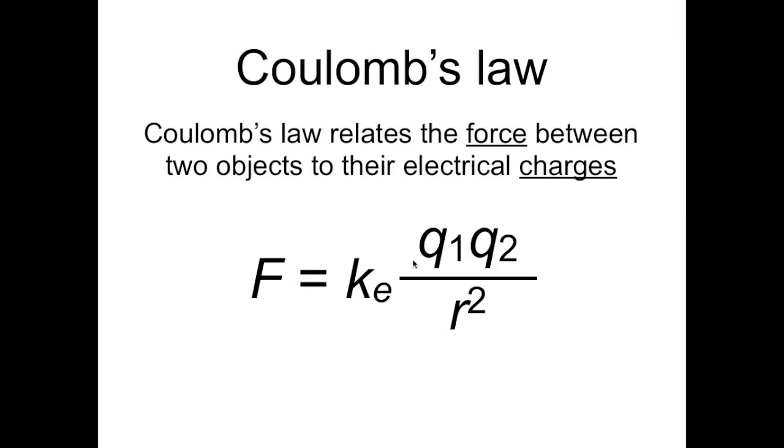So multiplying the charges is one key to Coulomb's law. The other key is the r squared in the denominator. Suppose we doubled the distance between two charges. How would the force change? Doubling the distance means we're changing the r to 2r. Squaring 2r gives 4r squared,